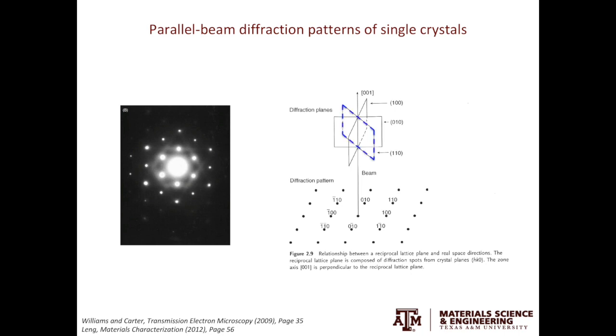If we draw a vector from the direct beam spot to the diffracted beam spot, it will give us the g vector, which is also the plane normal to that set of planes.